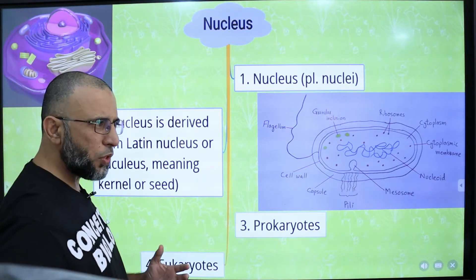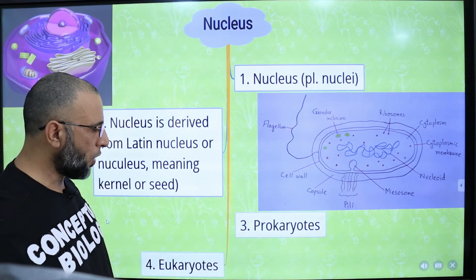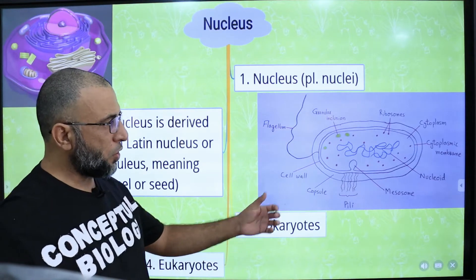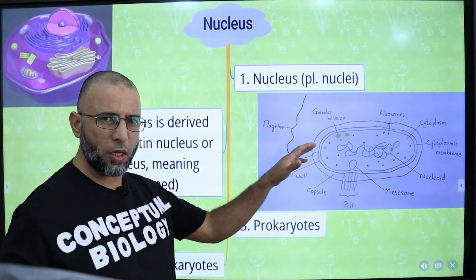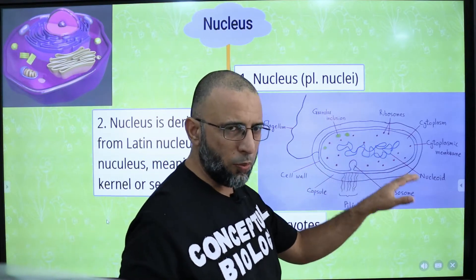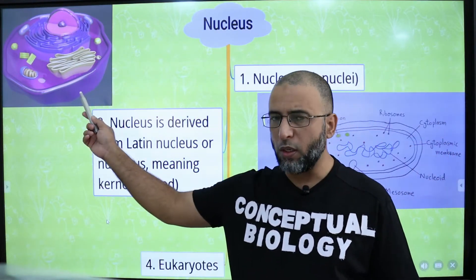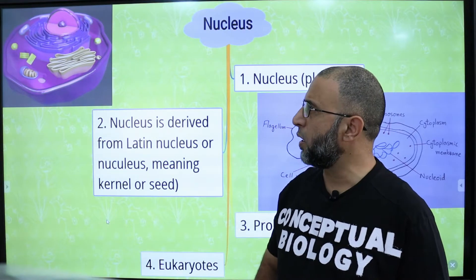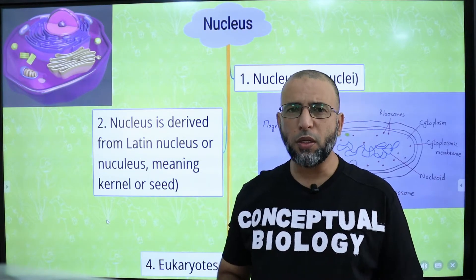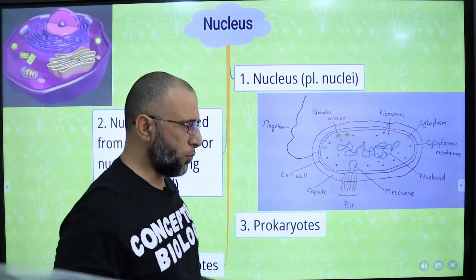Organisms are classified into two groups: prokaryotes and eukaryotes. Prokaryotes do not have a nucleus, so their genetic material is directly present in the cytoplasm. In eukaryotic cells — that is, animal cells and plant cells — they have a clear nucleus, and inside the nucleus genetic material is present in the form of chromosomes.